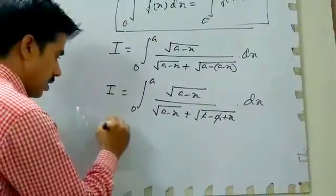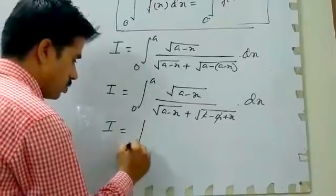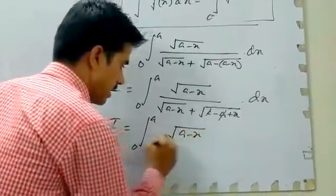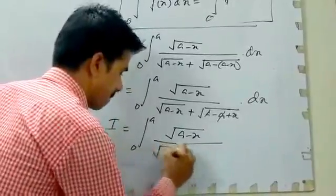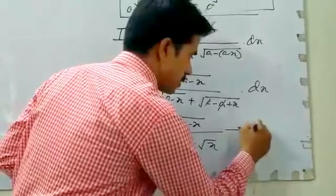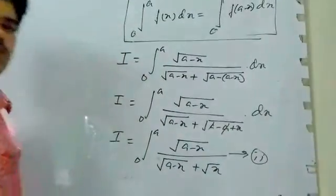We get I equal to integral from 0 to A of square root of A minus x plus square root of x. Take this as equation number 2.